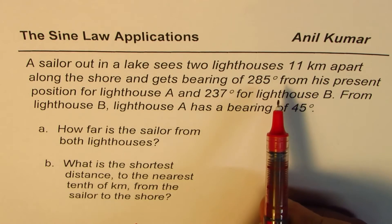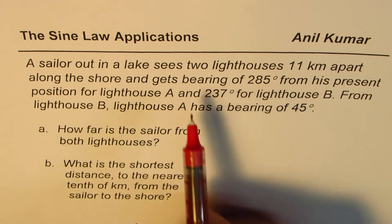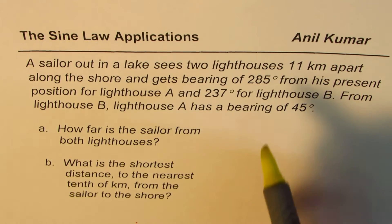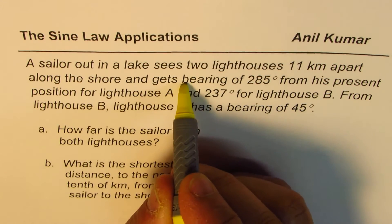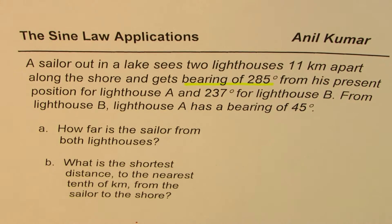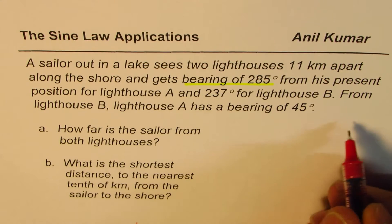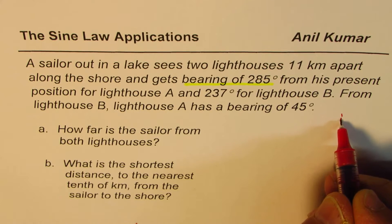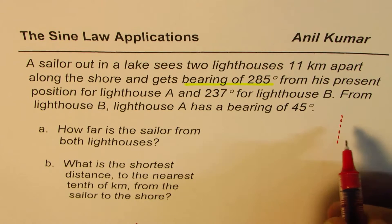Let's understand a few things — first, the bearing angle. Whenever you say a bearing of 285 degrees, what does that mean? The bearing angle is always the angle measured from the north. I'll try to sketch this here. We have very limited space, but I think we'll manage.